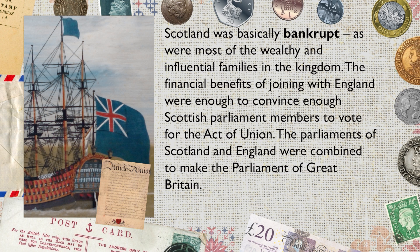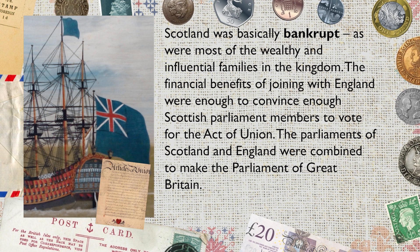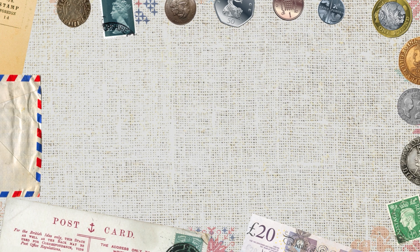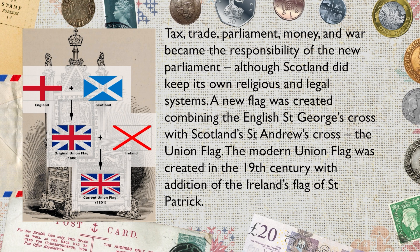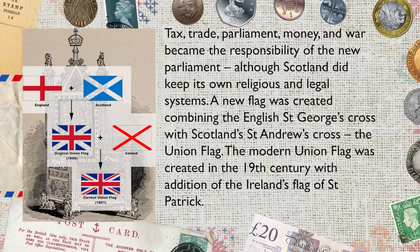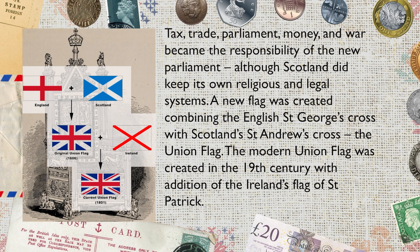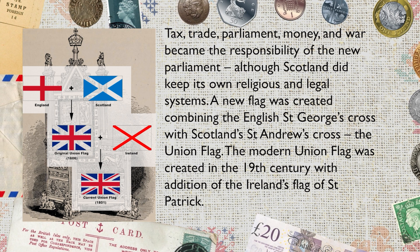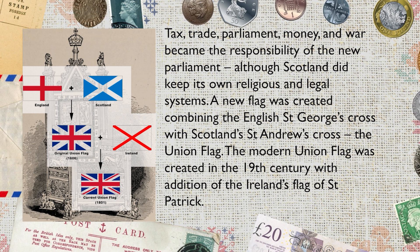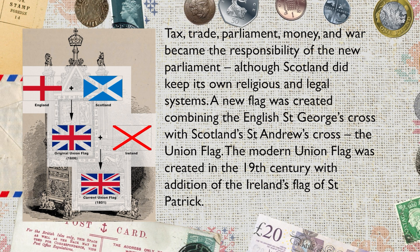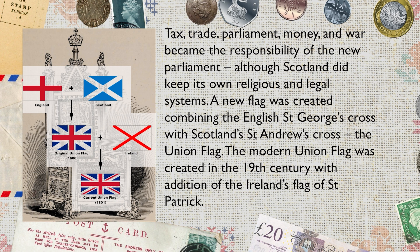The parliaments of Scotland and England were combined to make the Parliament of Great Britain. Tax, trade, Parliament, money and war became the responsibility of the new Parliament, although Scotland did keep its own religious and legal systems. A new flag was created, combining the English St George's Cross with Scotland's St Andrew's Cross — the Union Flag. The modern Union Flag was created in the 19th century, with the addition of Ireland's Flag of St Patrick.